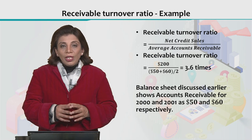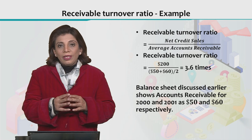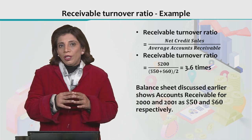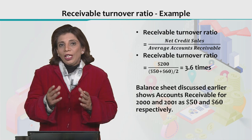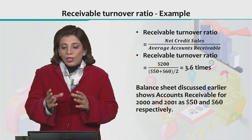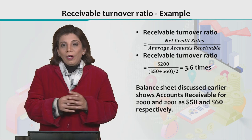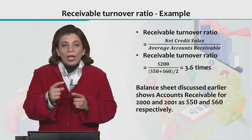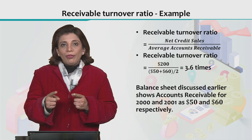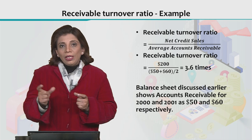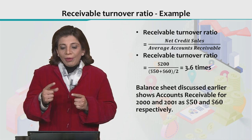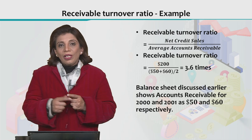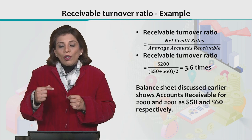I'll give you an example. The values you are seeing have been taken from company ABC's balance sheet, which I showed you earlier when we discussed how a balance sheet is made using a hypothetical company. The beginning accounts receivable value was $50, and at the end of the time period, accounts receivable was $60. You calculate the average by summing and dividing by 2. Then you take the net credit sales value and divide it by this average. The receivable turnover ratio turns out to be 3.6.